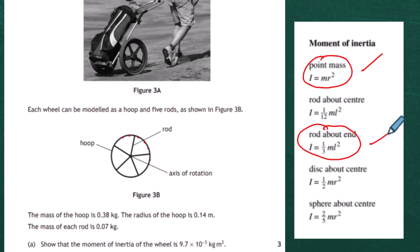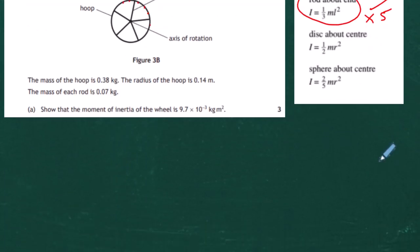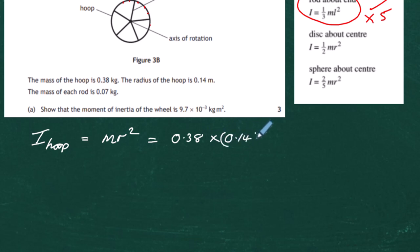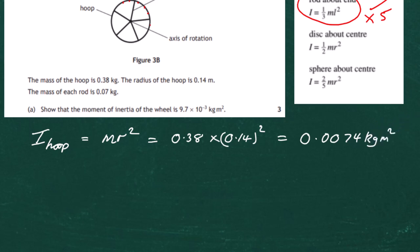To work out the total moment of inertia of the cart's wheel — and remember we have to multiply the rod term by five since we have five rods — let's work it out. The moment of inertia for the hoop equals mr², so plugging in values: the mass of the hoop is 0.38 kg multiplied by the radius squared, 0.14² = 0.0196. That gives I_hoop = 0.0074 kg·m².